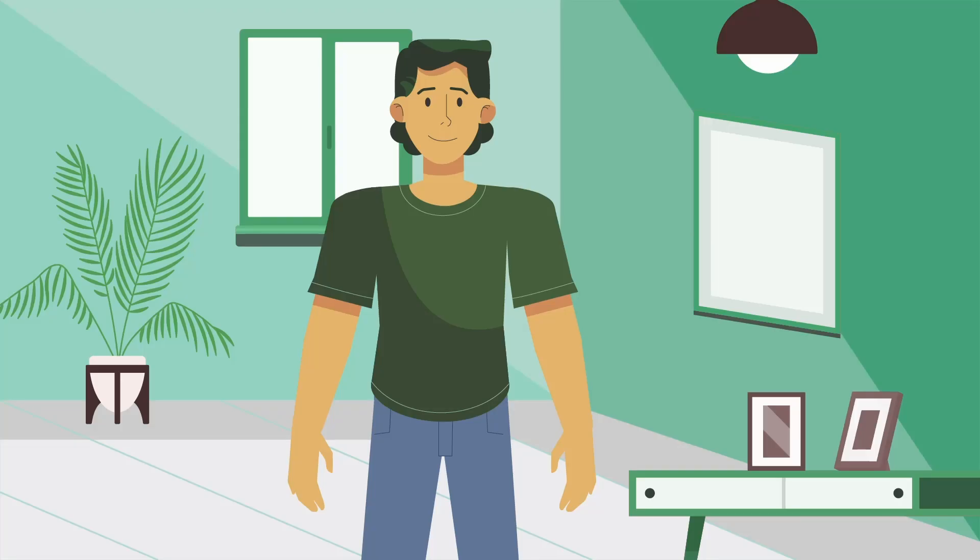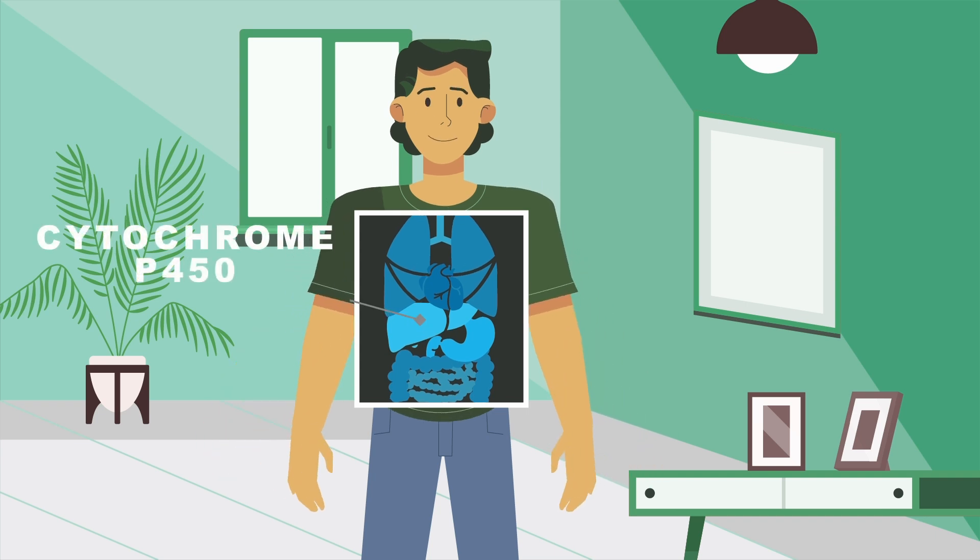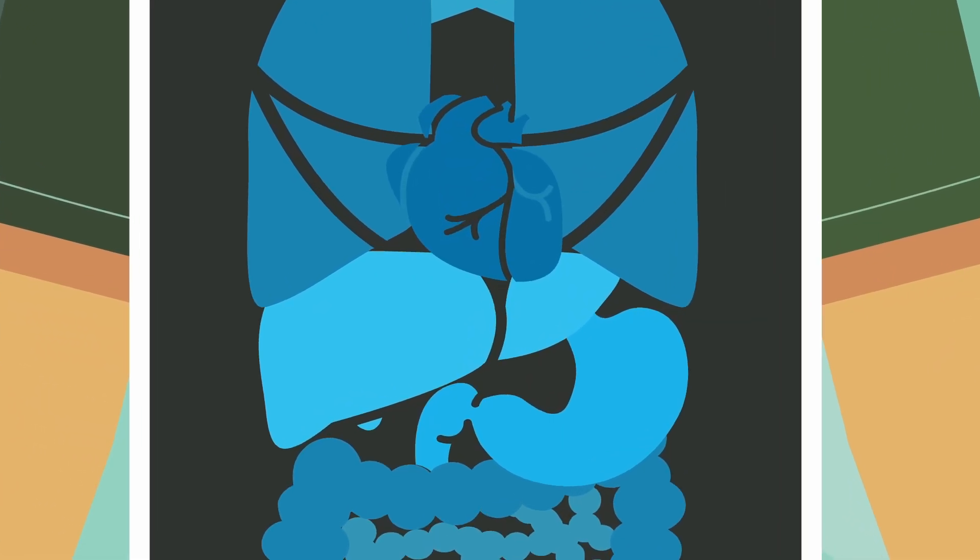When the body metabolizes Mitragynine, it is absorbed into the bloodstream and carried to the liver, where specialized enzymes called cytochrome P450 utilize oxygen to metabolize the alkaloid, adding a hydroxyl group commonly found in sugars and alcohol.